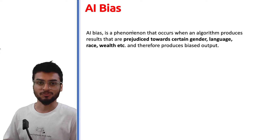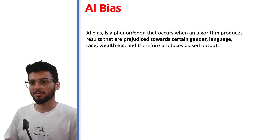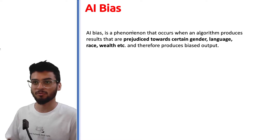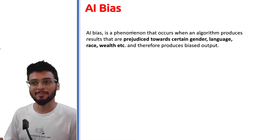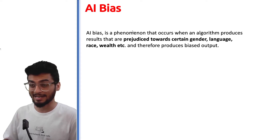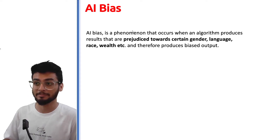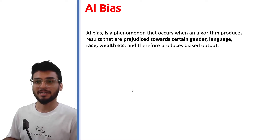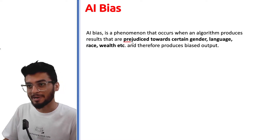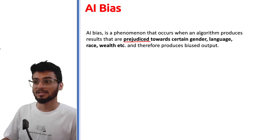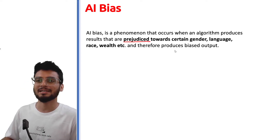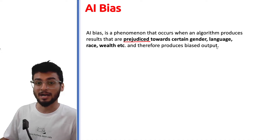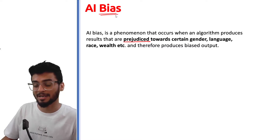In the previous example, we saw the female voice was used. But on a general term, it should have been equivalent — male voice and female voice both. Generally we now see that male voices also come, but at the start all the voices were female. So AI bias is a phenomenon where the algorithm produces a result that is biased towards a certain gender, language, or produces some kind of racist or discriminating output. That's what we call AI bias.